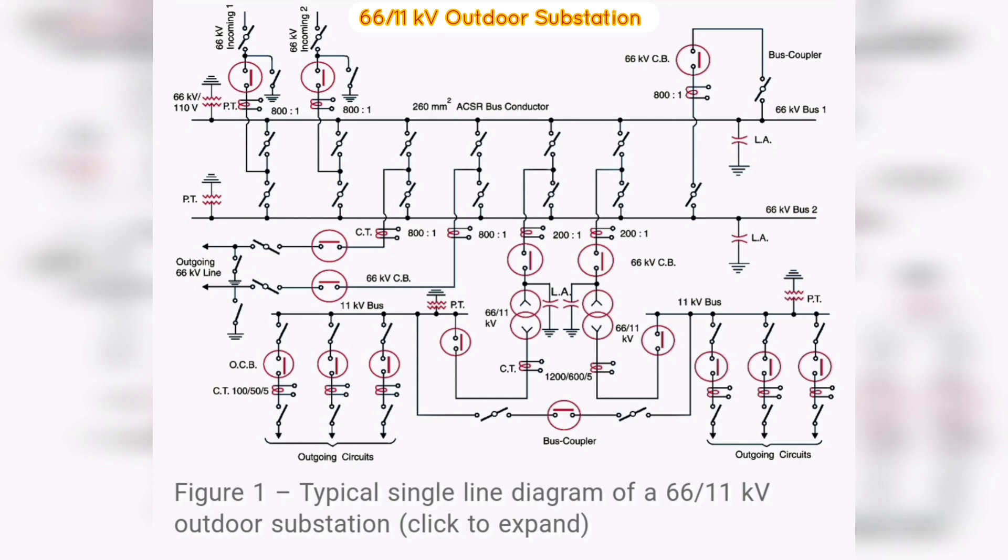There is also an arrangement to step down the incoming 66 kV supply to 11 kV by two units of three-phase transformers, each transformer supplying to a separate bus bar. Generally, one transformer supplies the entire substation load while the other transformer acts as a standby unit.